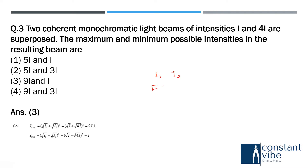I resultant is equal to I₁ plus I₂ plus 2 times the square root of I₁ times I₂ times cosine of the phase angle.